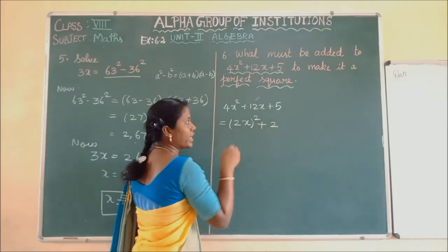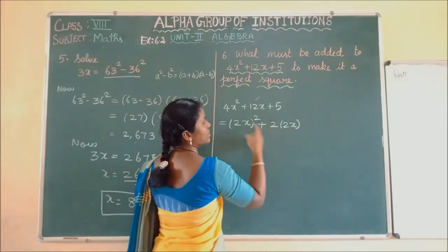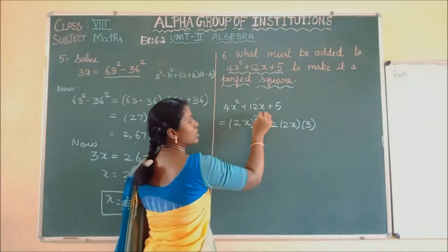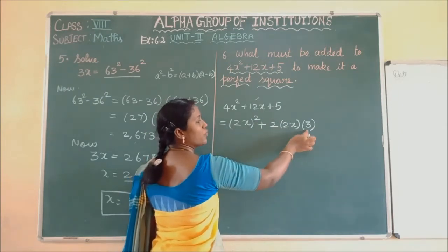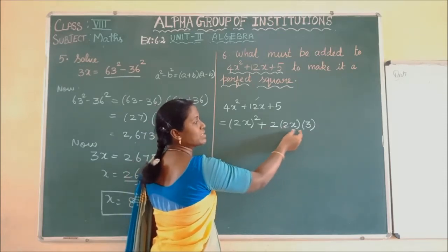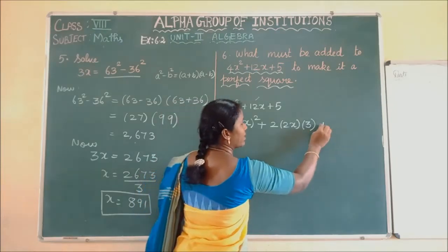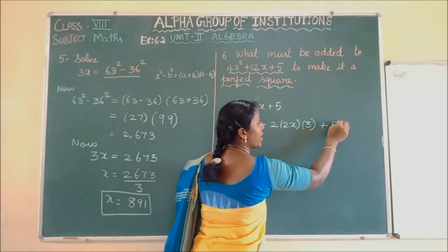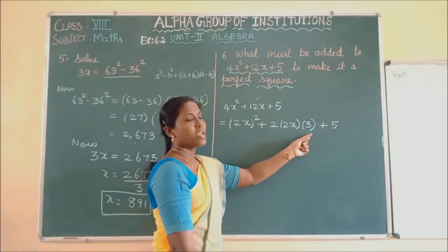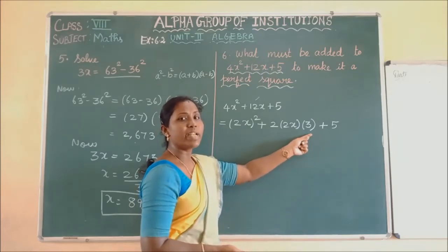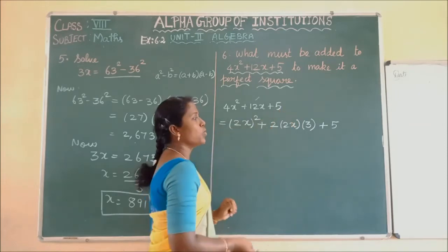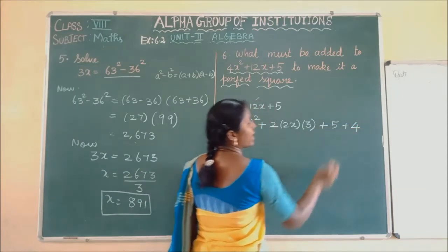If B is 3, then B square should be 9. But here we are having only 5 as the constant. So we need to add 4 to the expression. We are adding plus 4, so the expression becomes 2X whole square plus 2 into 2X into 3 plus 9, which equals 2X whole square plus 2 into 2X into 3 plus 3 square.